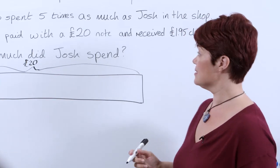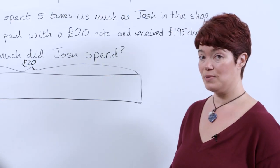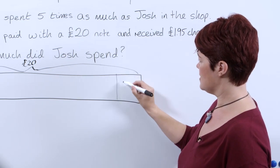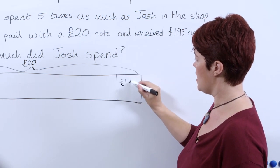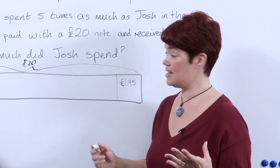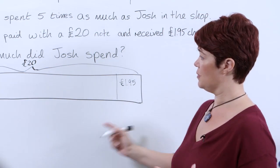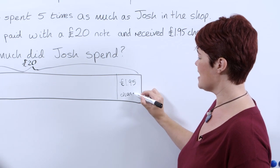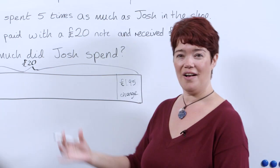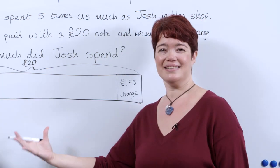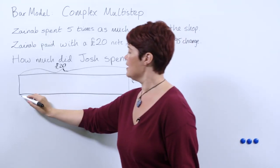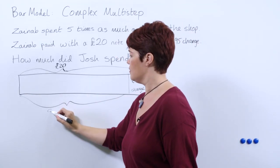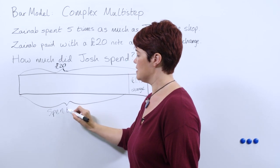What do we know next? £1.95 was given in change. I'm going to put that at this end — £1.95. At this point it's a really good idea to ask the pupils what this part of the bar represents. It gives them a good understanding that that is the money Zainab has spent, so we can label this bar with what has been spent.